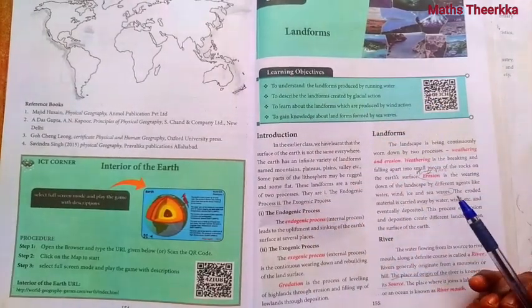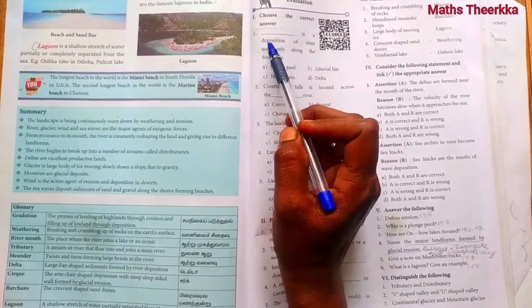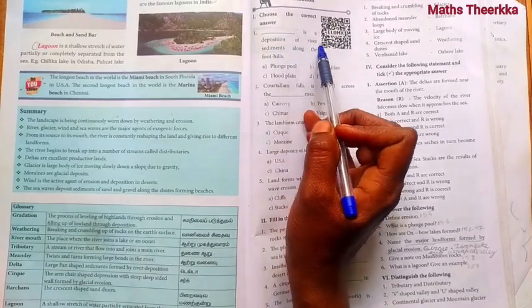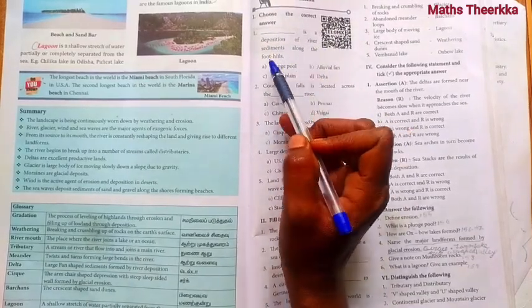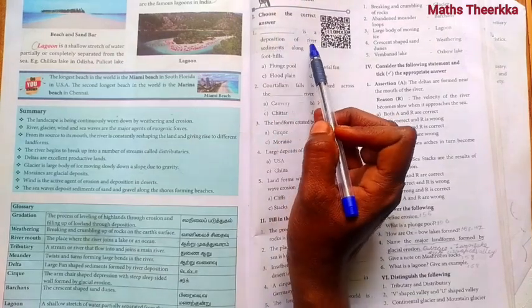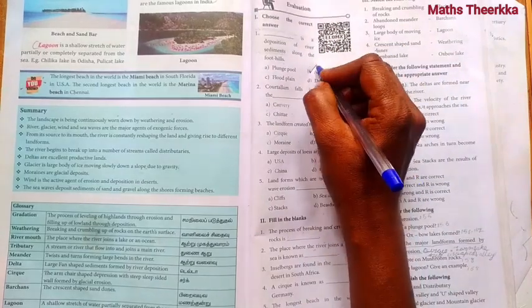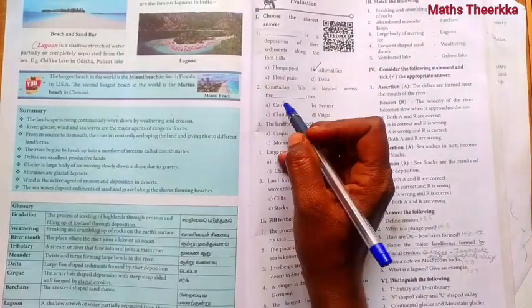Book back one mark answers. First roman, choose the correct answer. First one, blank is a deposition of river sediments along the foothills. Option B, alluvial fan.